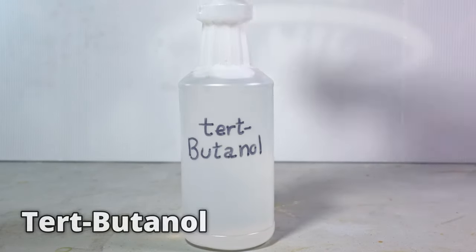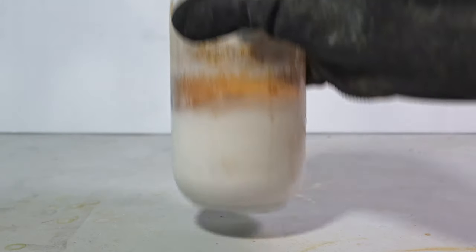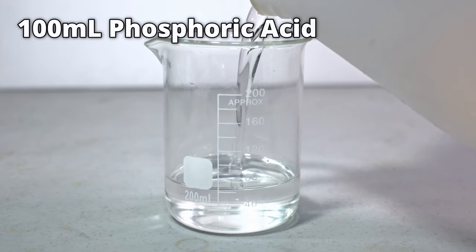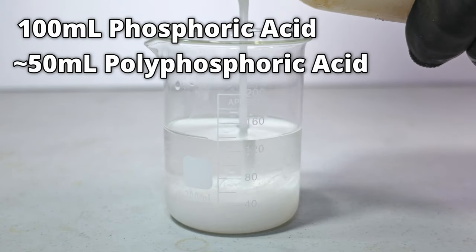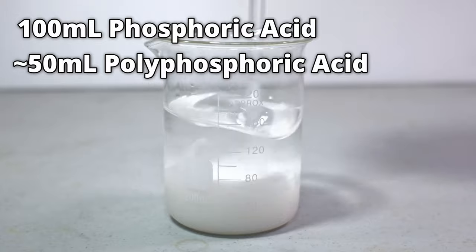The materials you need are tert-butanol, phosphoric acid, and polyphosphoric acid. The first thing we're going to do is mix 100 milliliters of phosphoric acid with 50 milliliters of polyphosphoric acid. This will remove all the water in the solution while keeping it relatively mobile.